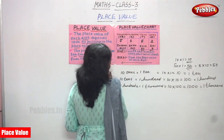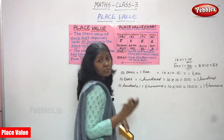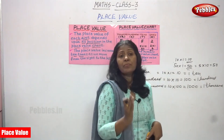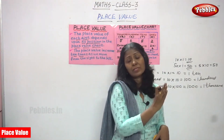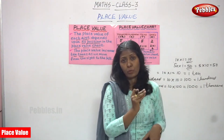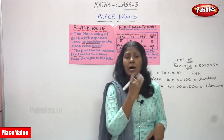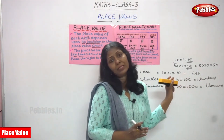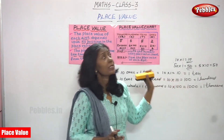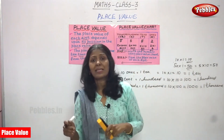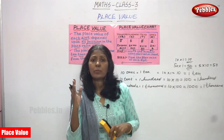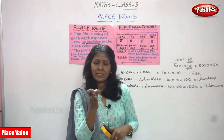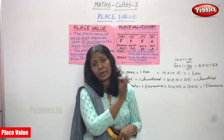We consider first ones, then tens, then hundreds, and then thousands. For Class 3 level, thousands is enough. So: ones, tens, hundreds, and thousands.